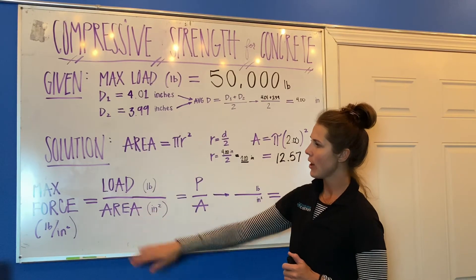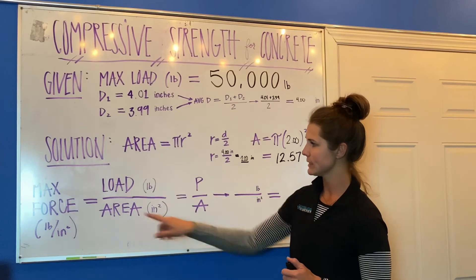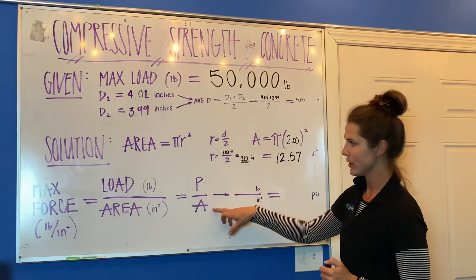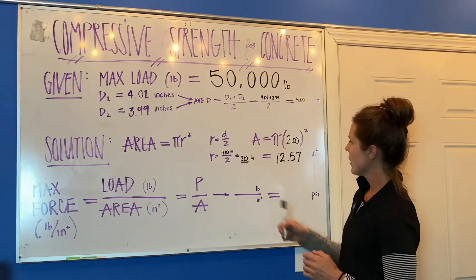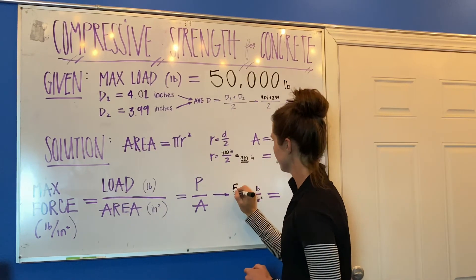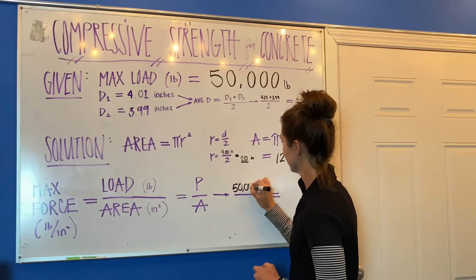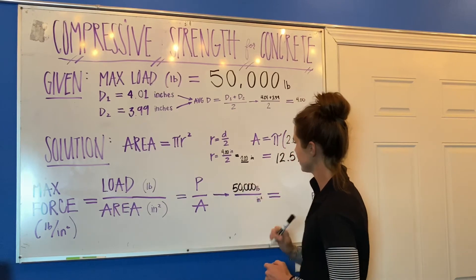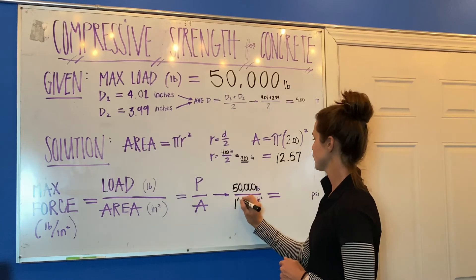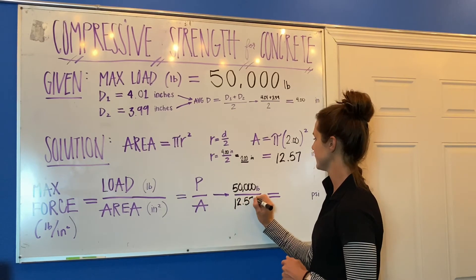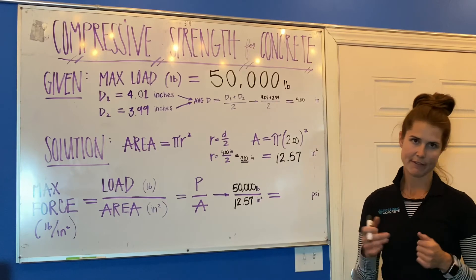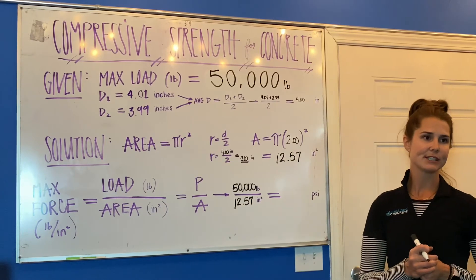The equation is max force, which is our load in pounds divided by our area — P over A, pounds over area. Our max load was 50,000 pounds and we're going to divide that by our area of 12.57 inches squared.